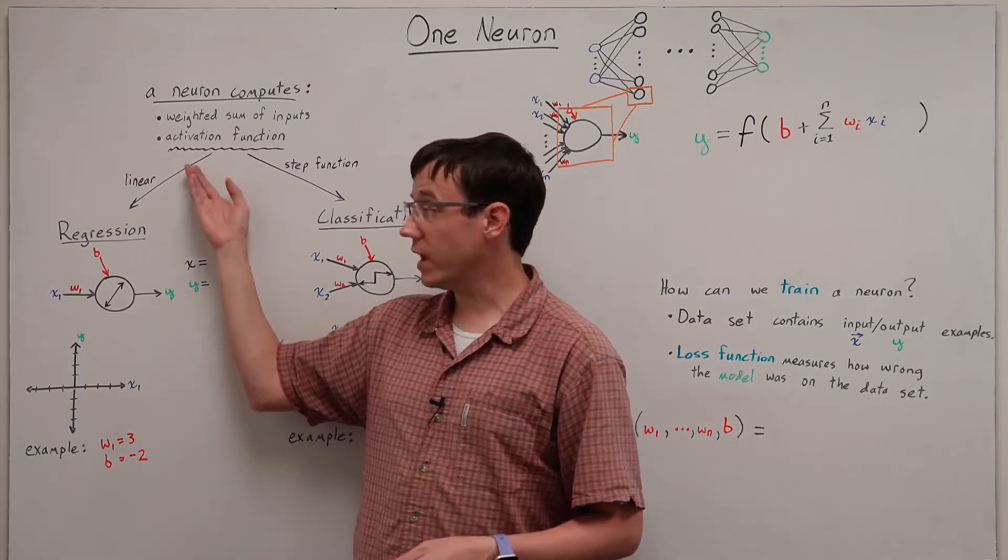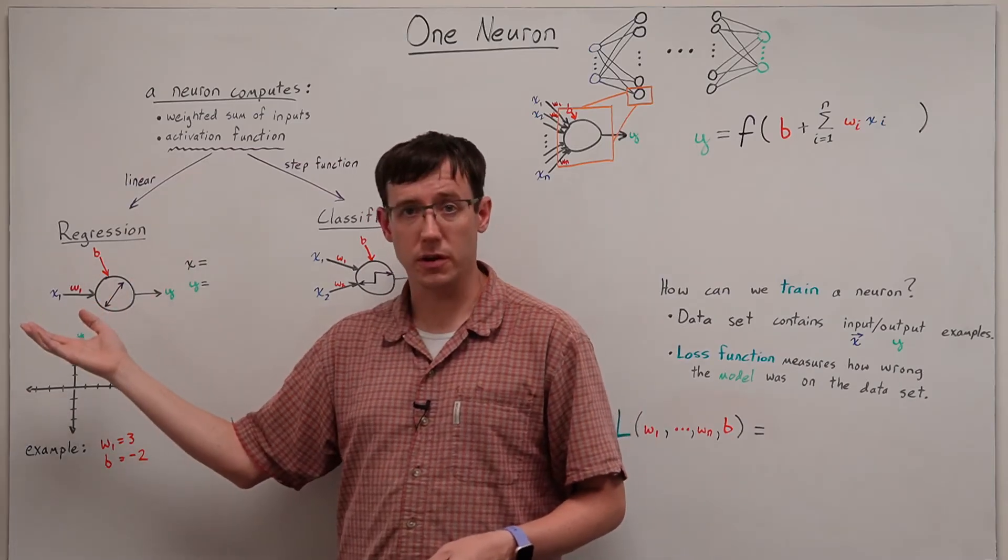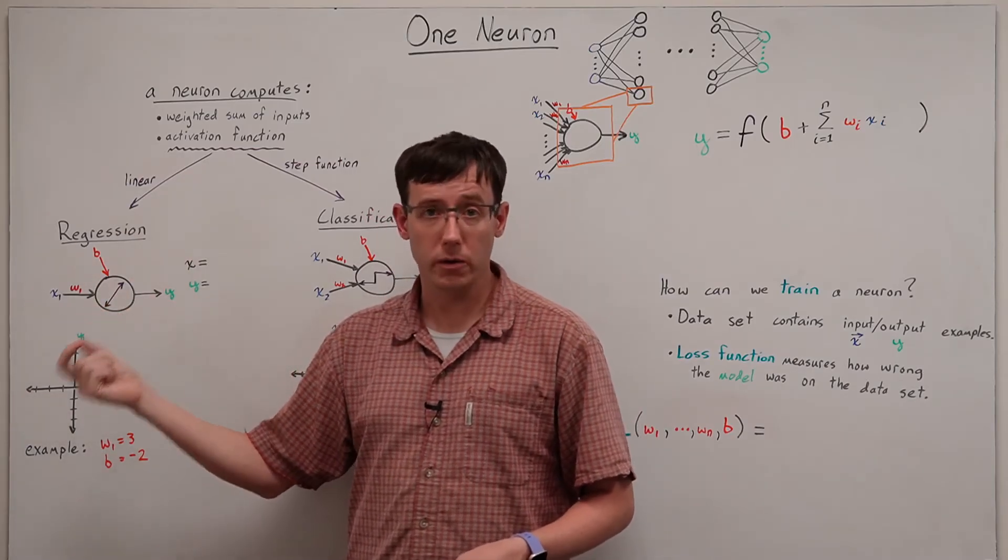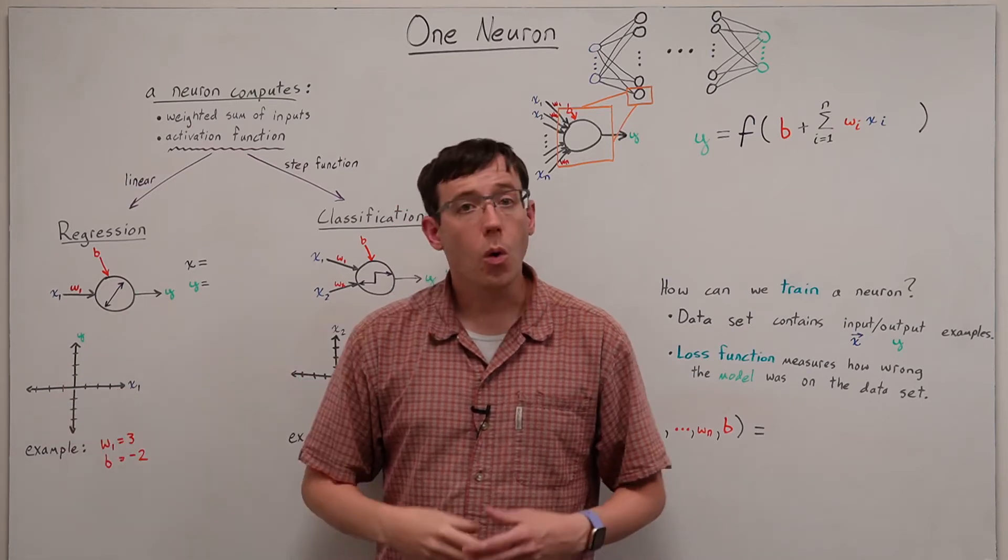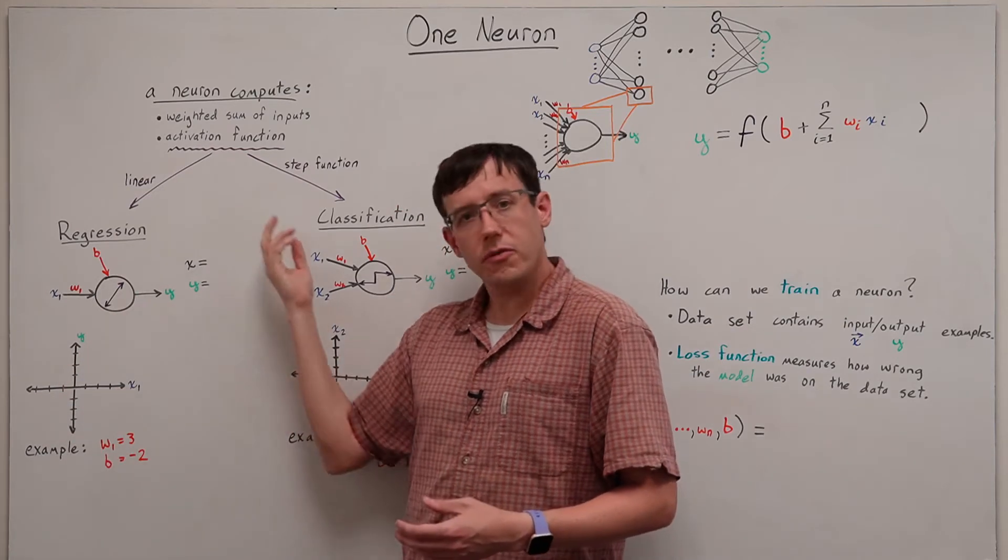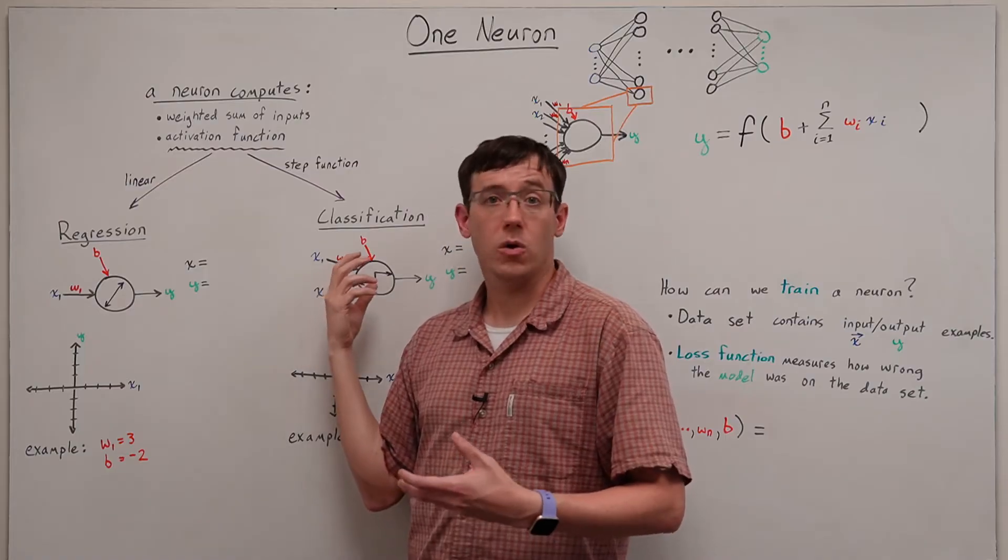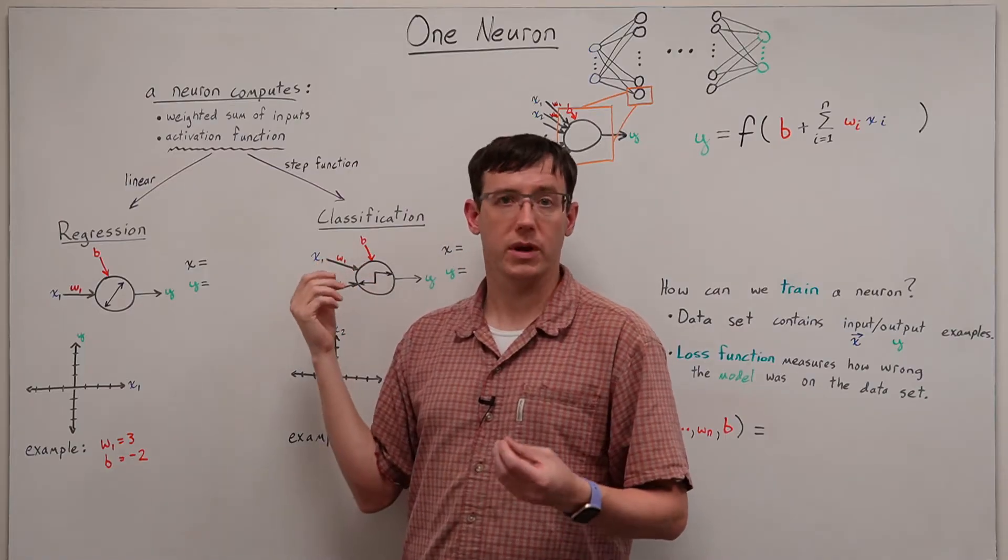Specifically, we can use a linear activation function to make our one neuron model perform regression, or we can use a step function to get our single neuron model to perform classification.